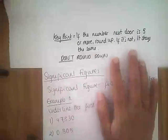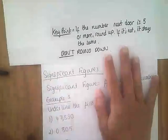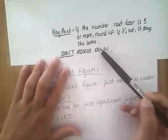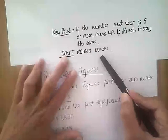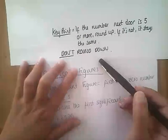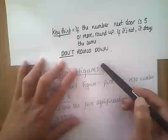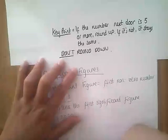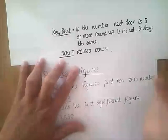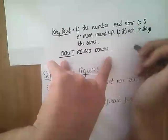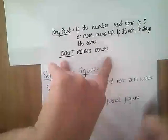We are continuing our work on rounding, and we are looking at rounding to significant figures. In the last video we were rounding to decimal places. If you haven't consolidated your knowledge on rounding to decimal places, go back and look at that first. The key point about rounding is: if the number next door is five or more, you round up. If it's not, the number stays the same — you don't ever round down.